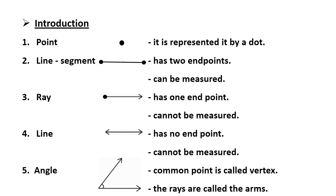We represent a point by a dot. It does not have length, width, or thickness. Now, the second one is line segment. A line segment has two end points and it can be measured. You can see that in the figure.